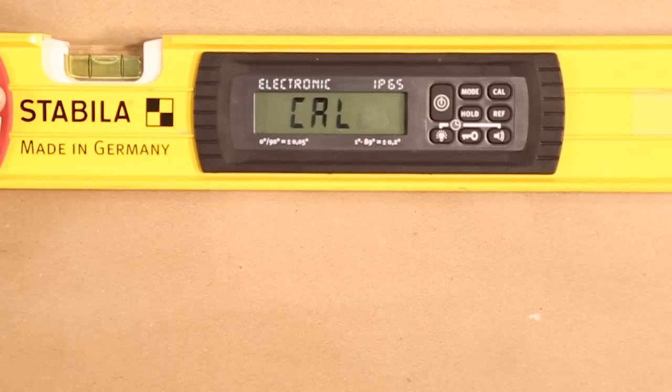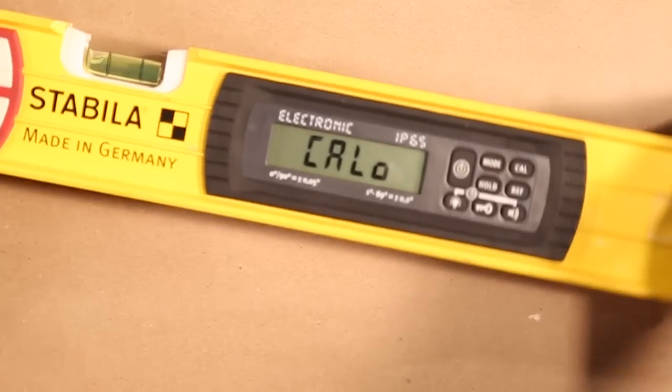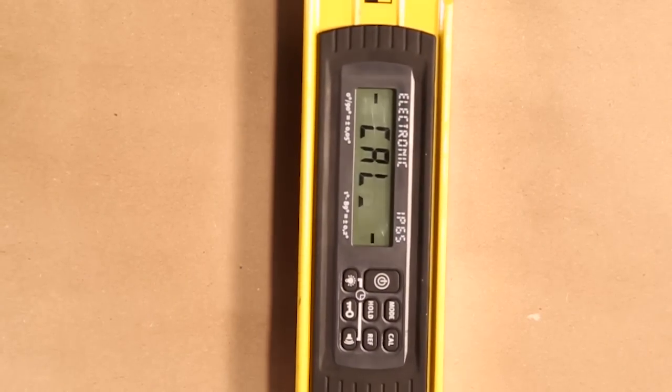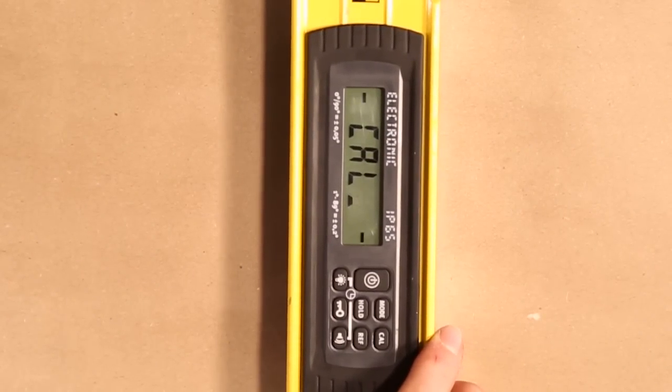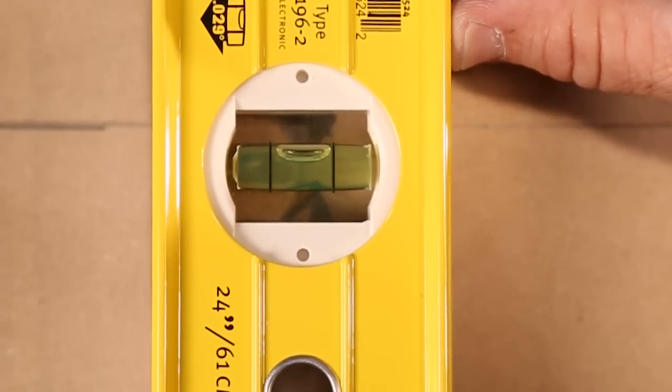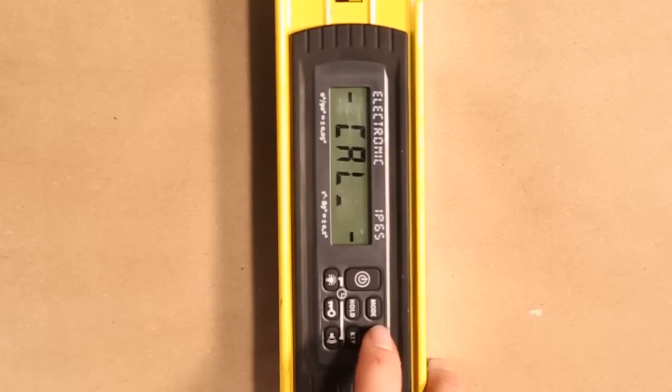You're going to notice the bottom line will stop flashing. That's when you do your first rotation. We're going to rotate counterclockwise. You're going to center your top vial. You want to get that perfect. Once that's done, you're going to hit the calibration.